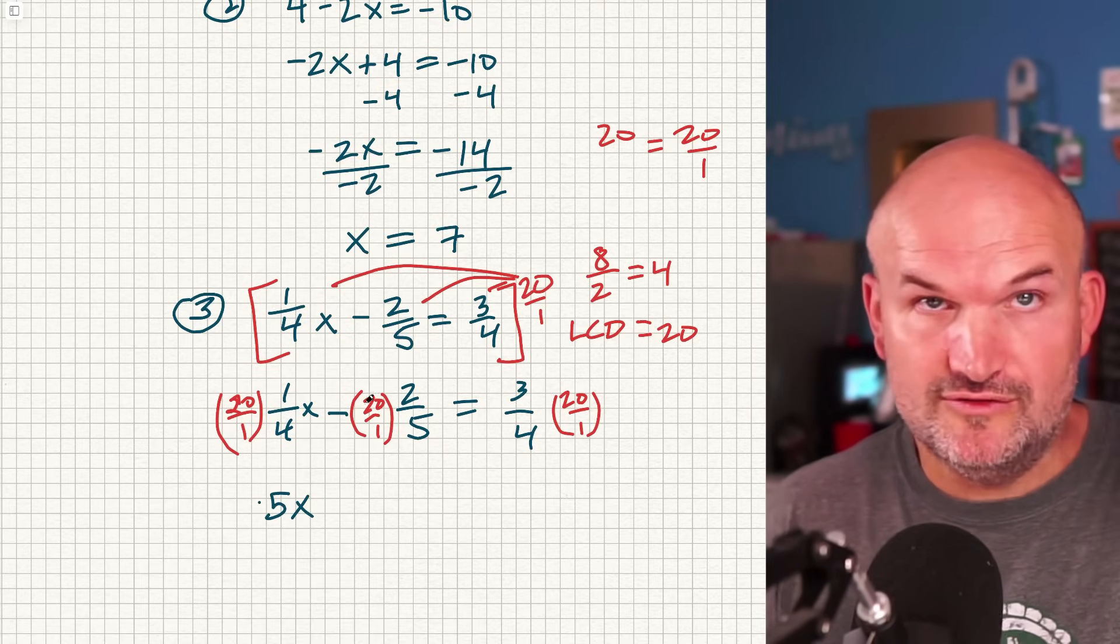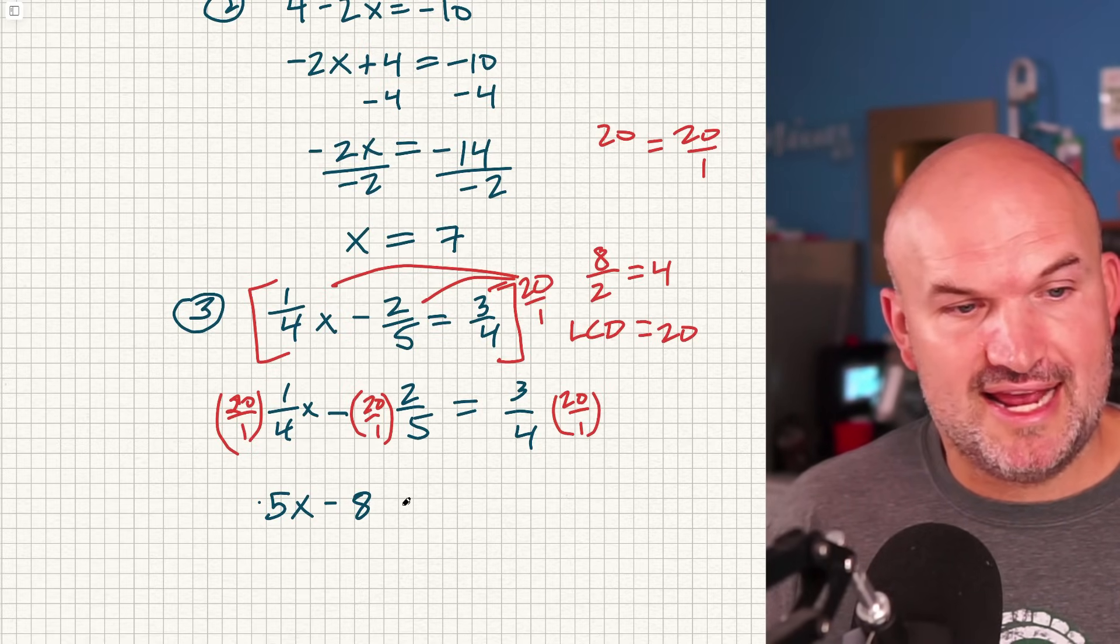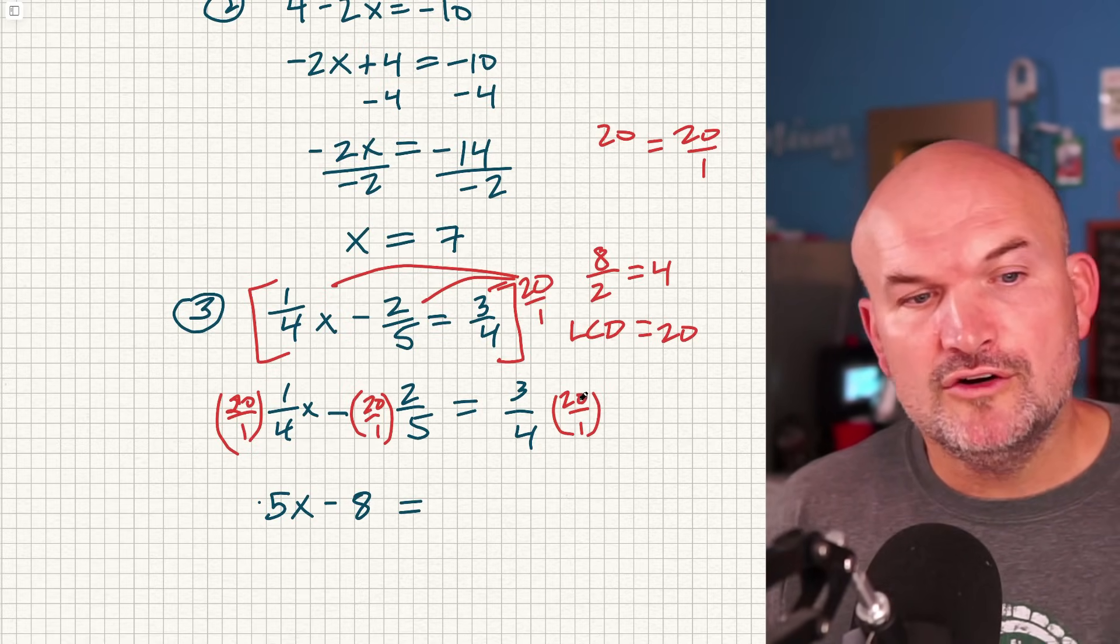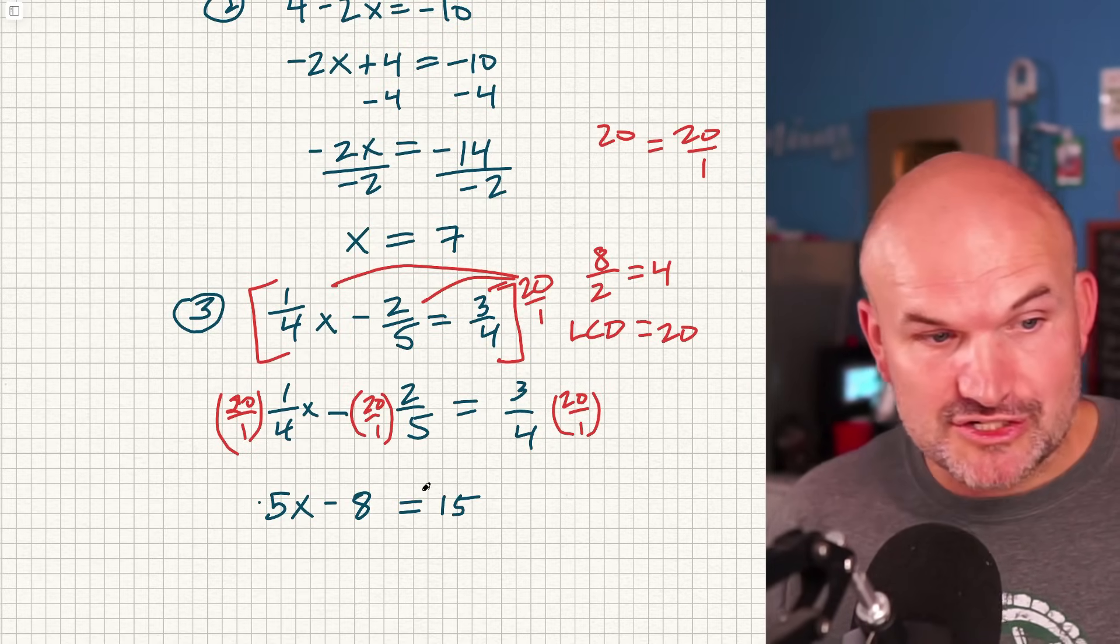Five evenly divides into 20 four times, four times two is going to be eight. So it's a minus 8. And then over here, 4 divides into 20 five times, 5 times 3 is going to be 15. Now, ladies and gentlemen, I have a two-step equation.